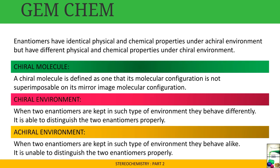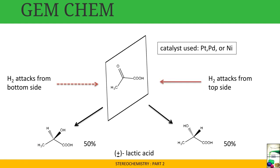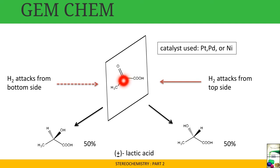Now we deal with an important topic: the synthesis of an enantiomer and the concept of resolution. Consider 2-oxopropanoic acid, also known as pyruvic acid. This is an achiral molecule — the central carbon has a C=O group where two bonds are occupied by a single oxygen, making it achiral. When we react it, however, we generate chiral molecules — both dextrorotatory and levorotatory products.